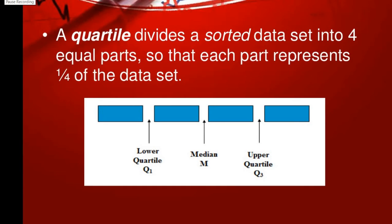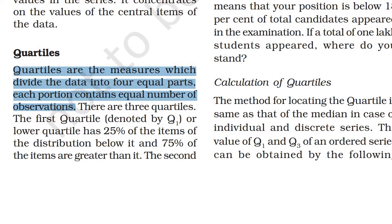In this class we can study about quartiles. A quartile divides a data set into four equal parts. Quartiles are the measures which divide the data into four equal parts. Each portion contains equal number of observations. There are three quartiles: the first quartile, denoted by Q1 or lower quartile, has 25 percentage of items.